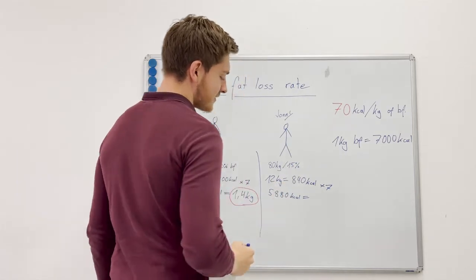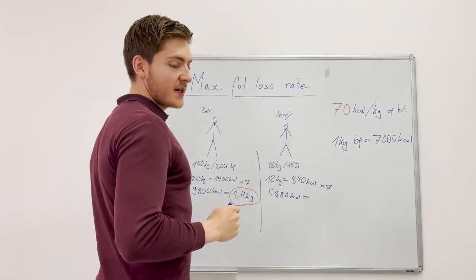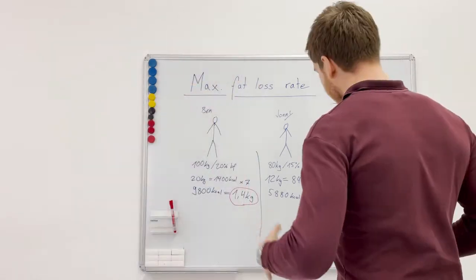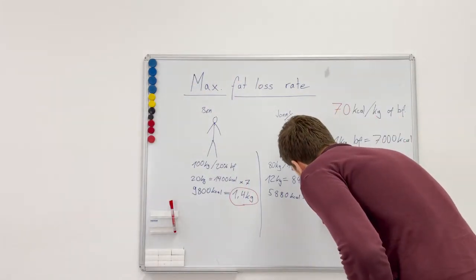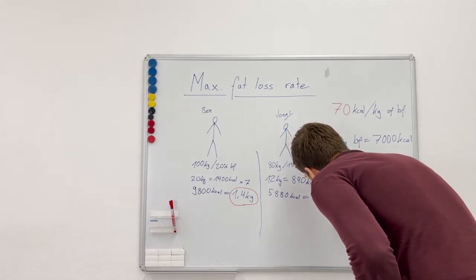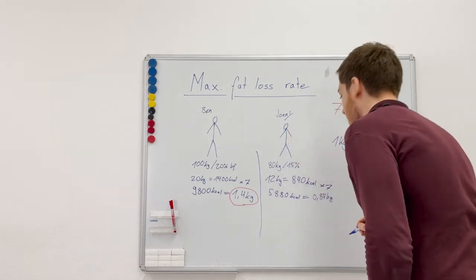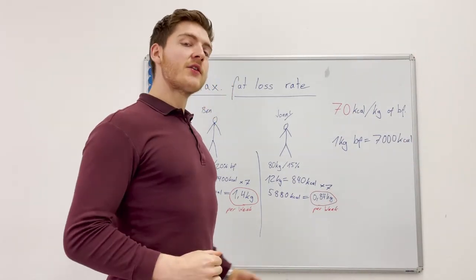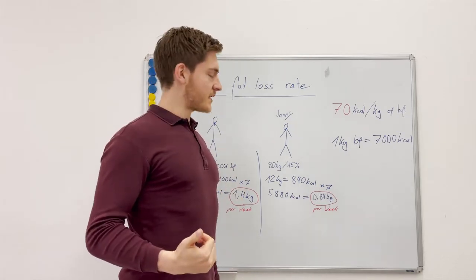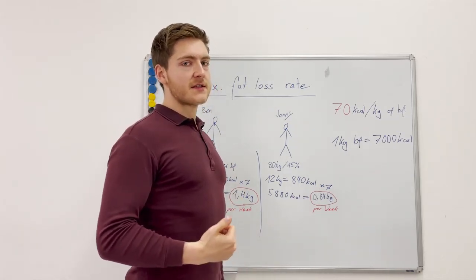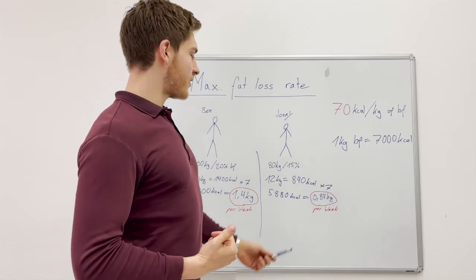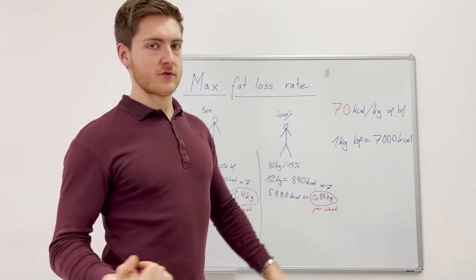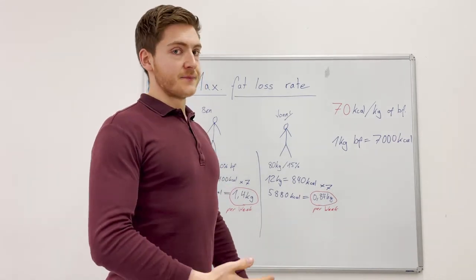In this case right now with 5880 calories and knowing that we need 7000 for one kilogram, this will lead them to a loss of 0.84 kilograms per week. As you can see, the leaner you get, the lower your body fat gets, the smaller of a deficit you have to create. Because if you're going to create a deficit of like a thousand and you're already around like 12-13 percent body fat, you're going to lose muscle.